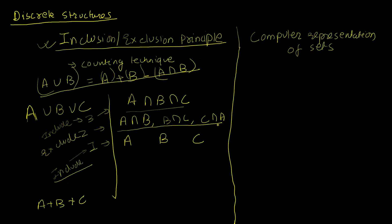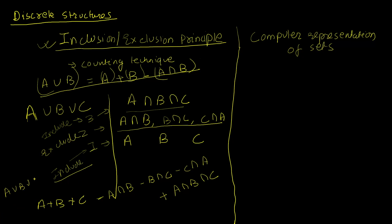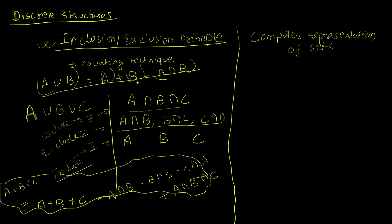Applying this: we add A + B + C, then subtract A ∩ B, subtract B ∩ C, subtract C ∩ A, and then add back A ∩ B ∩ C. This is indeed the formula for the union of three sets A, B, and C, and it works generally for any number of sets.